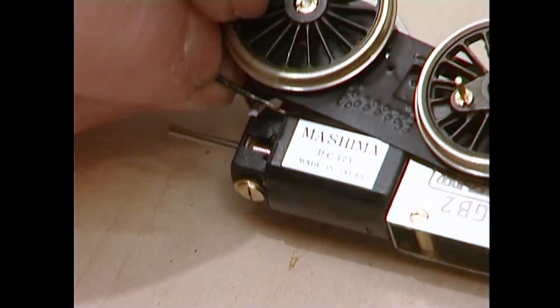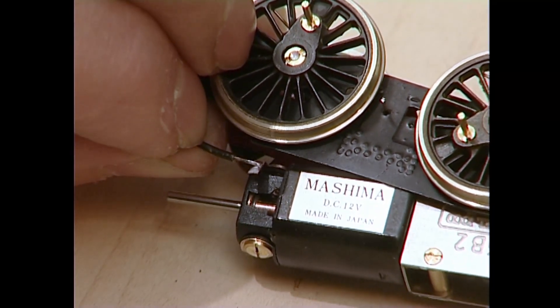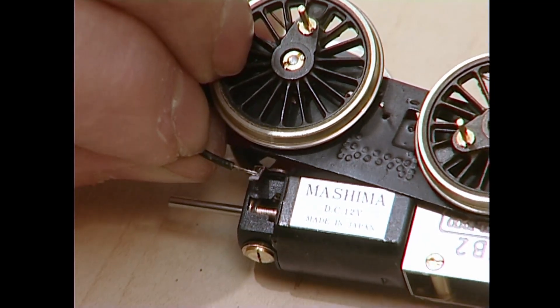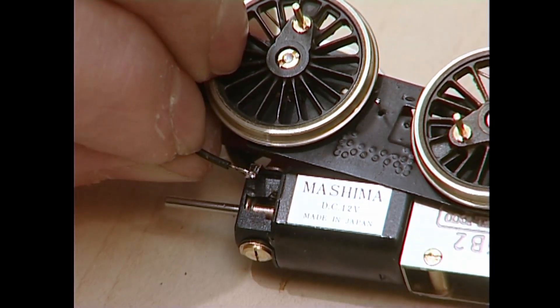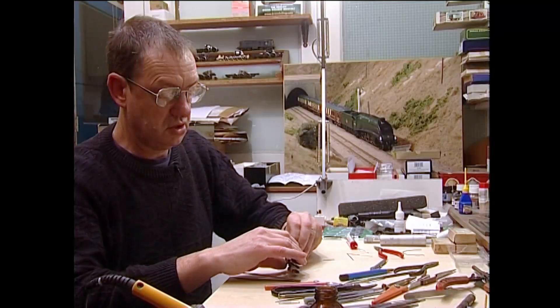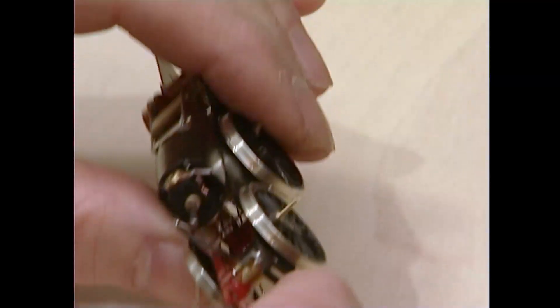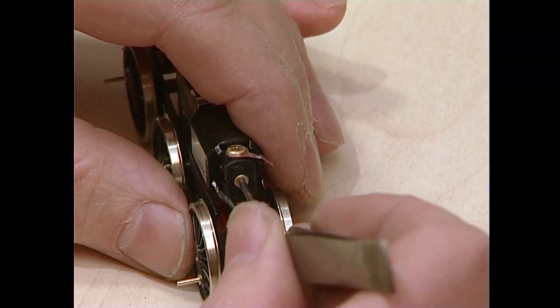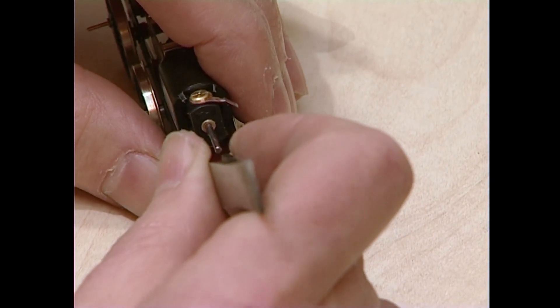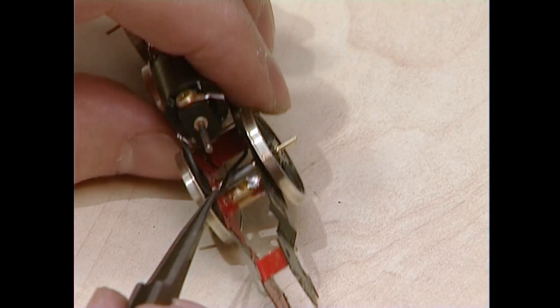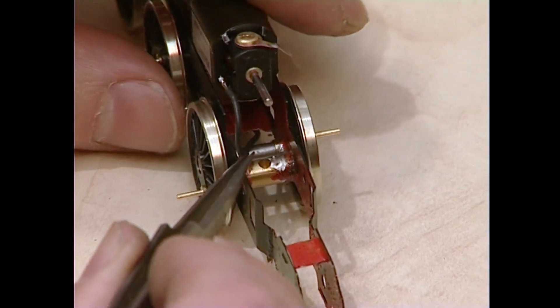Now, which side you wire it to is very important because if it's the opposite way to the way you want, it will run in reverse when you want it to go forward. It's not a matter of life and death. I've checked with this one. It's called polarity and I know which way it should go. However, if you get it the wrong way around, just unsolder the wire and put it to the other motor tag.